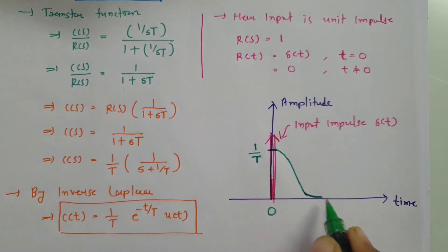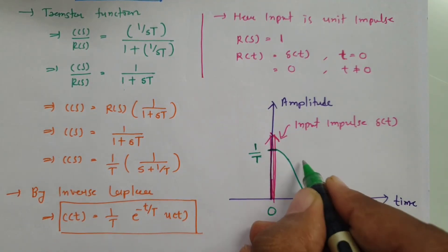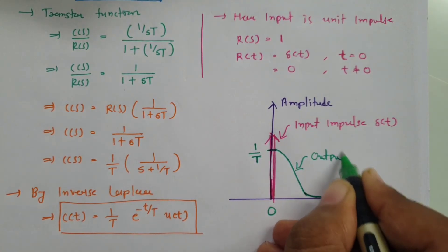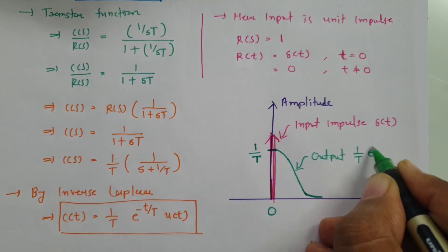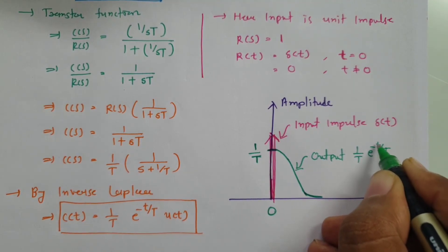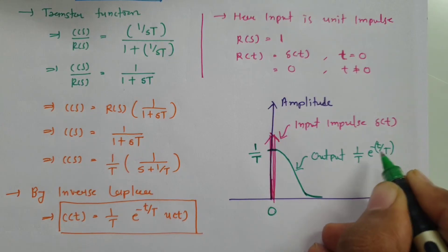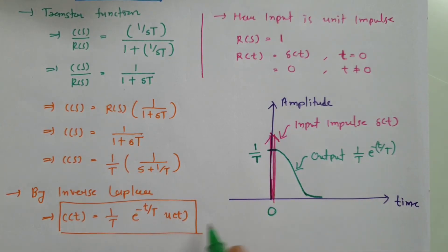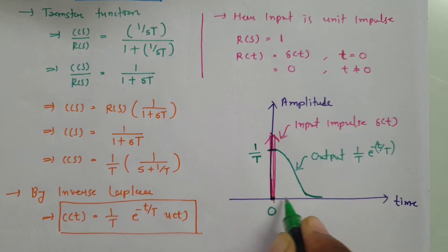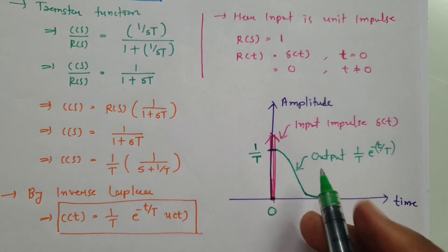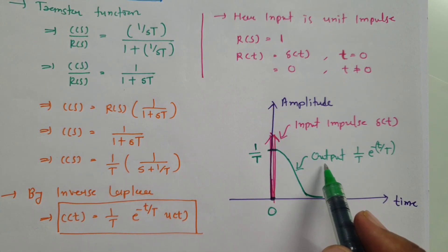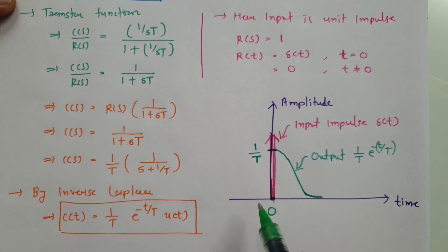The output decreases exponentially as per the function C(t) = (1/T)·e^(−t/T). I am not writing u(t) here because we just consider the graph for t greater than 0, so we only consider this portion of the graph. That is how the response will happen with a first order system when the input is an impulse signal.